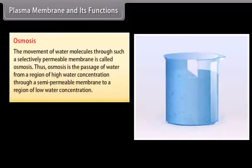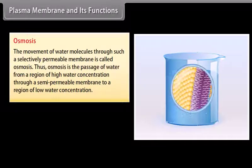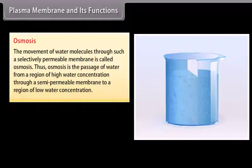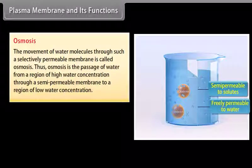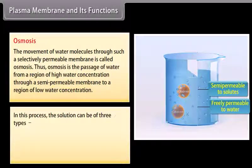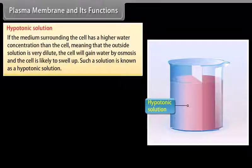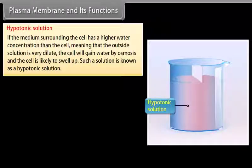Osmosis is the movement of water molecules through a selectively permeable membrane. It is the passage of water from a region of high water concentration through a semi-permeable membrane to a region of low water concentration. The surrounding solution can be of three types: hypotonic, isotonic, or hypertonic. In a hypotonic solution, the medium surrounding the cell has a higher water concentration than the cell — meaning the outside solution is very dilute — and the cell will gain water by osmosis and is likely to swell up.